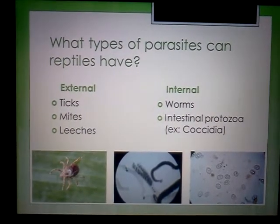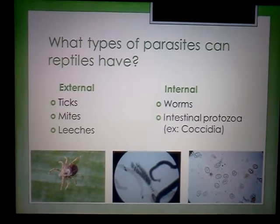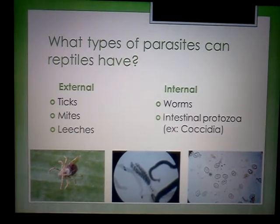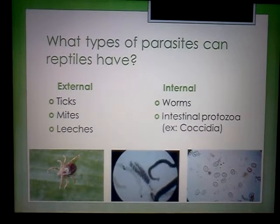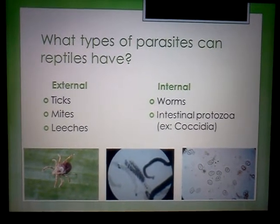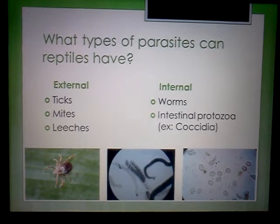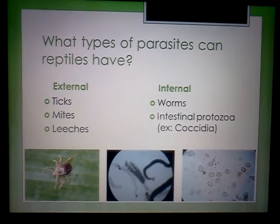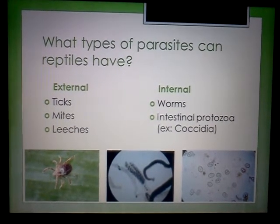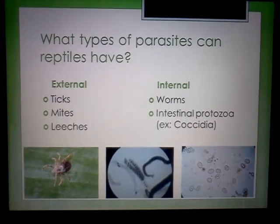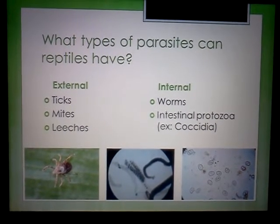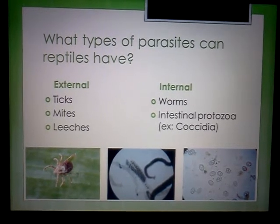So what types of parasites can reptiles have? Well, they can have external parasites like ticks, mites, and leeches, but they can also have internal parasites like worms — your pinworm, roundworm, hookworm, other stomach worms. They can also have intestinal protozoa infections. A good example is coccidia.